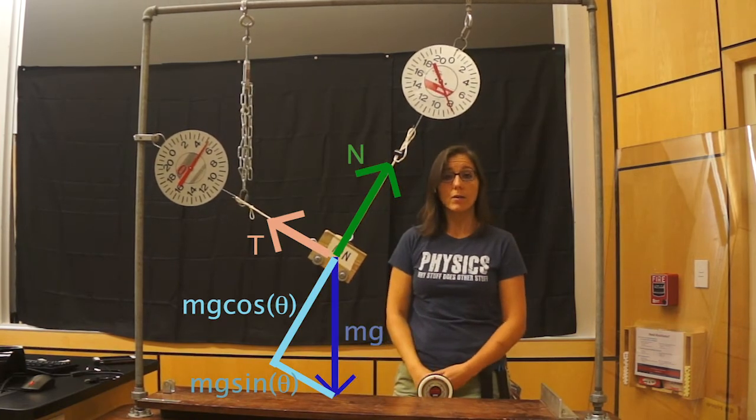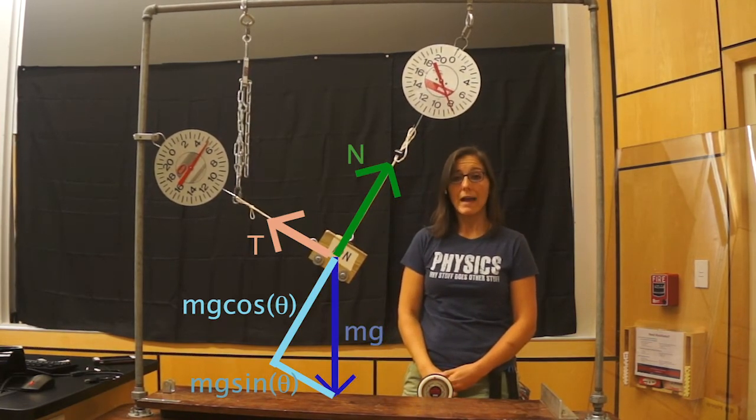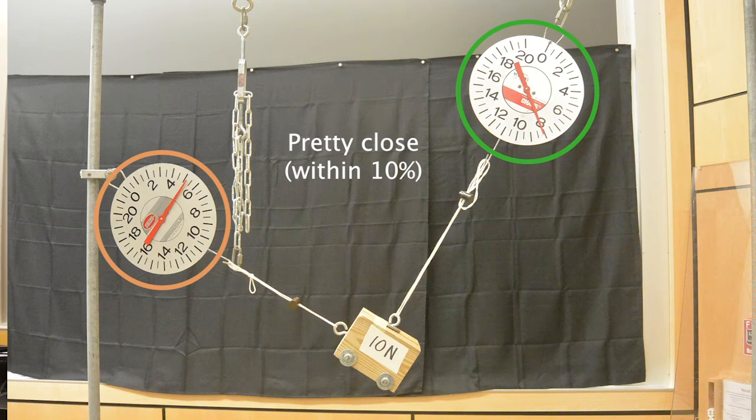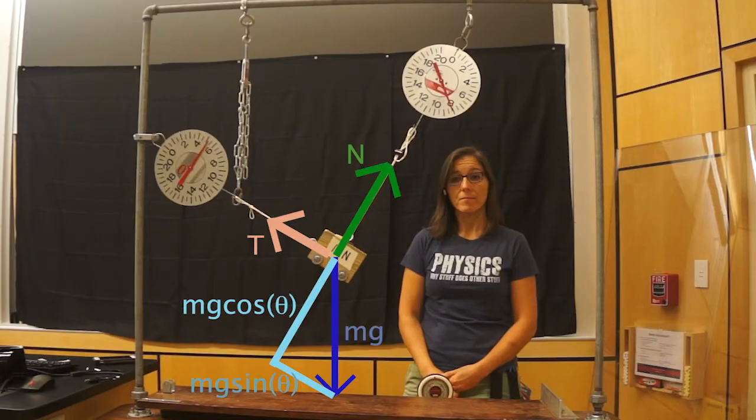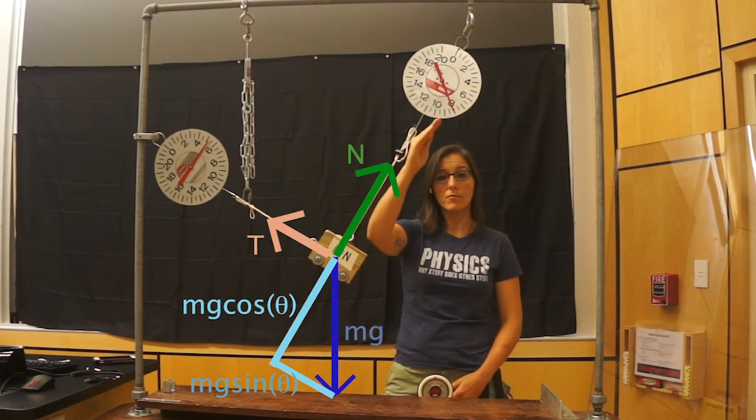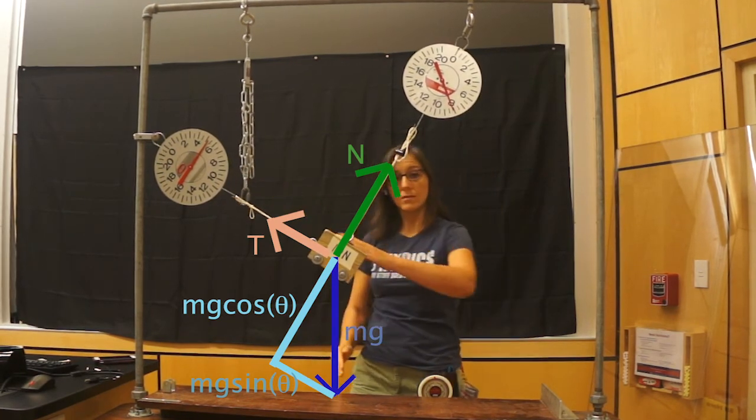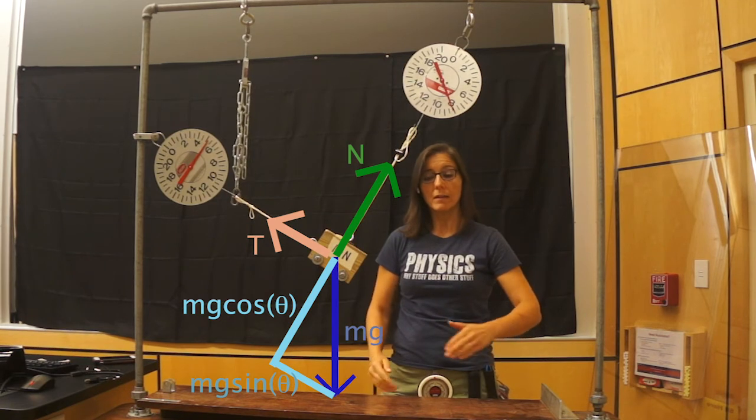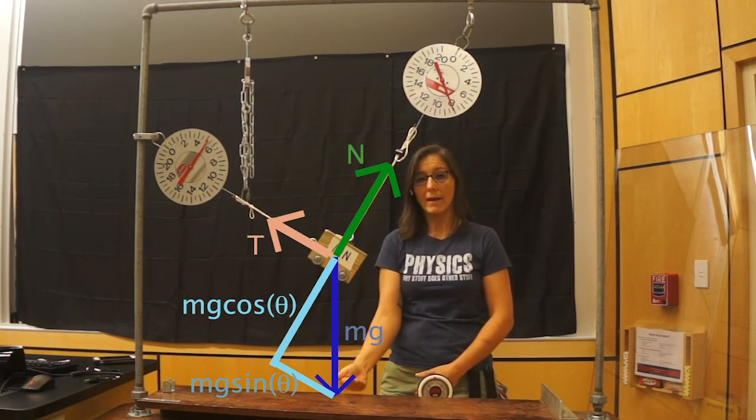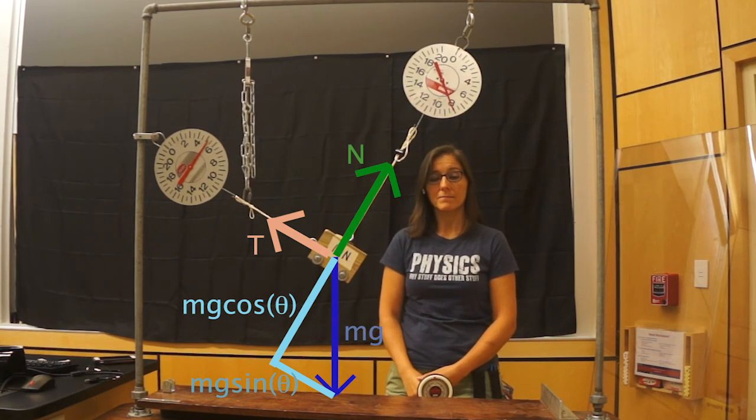And so if we look at the scales now, we actually see that they read the exact same thing that they read before, demonstrating that this support force and this parallel force exactly balance the weight of this object. Thank you.